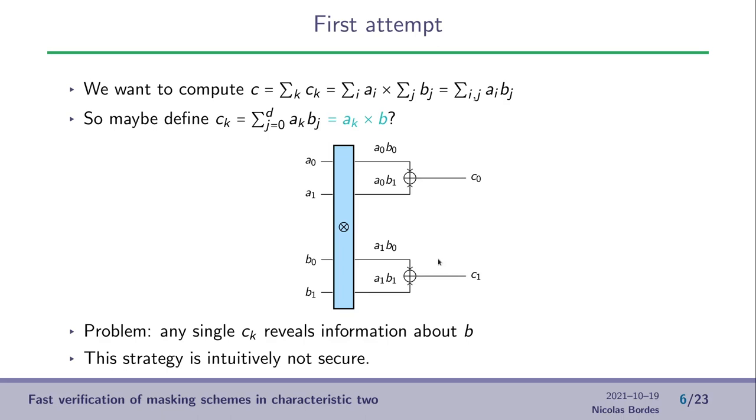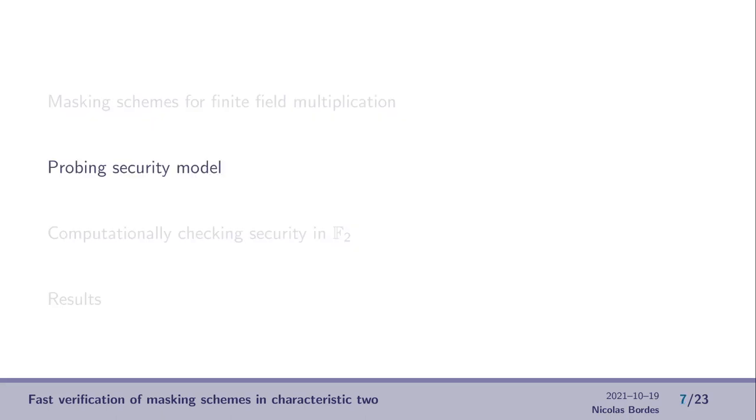For example, if C1 here is non-zero, then we are sure that B itself is non-zero. So intuitively, this strategy is not secure. And now we will see how to modelize this, to formalize this into the probing security model.